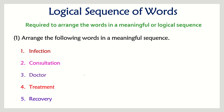The correct sequence is 1, 3, 2, 4, and 5. First is infection — once I get an infection, we go to the doctor. Then after going to the doctor, we take the consultation. After consultation, the doctor gives us treatment, and then we recover.